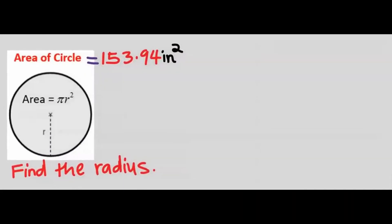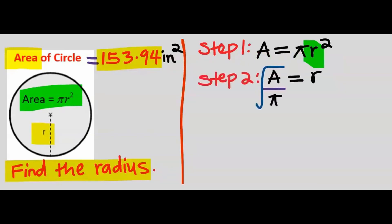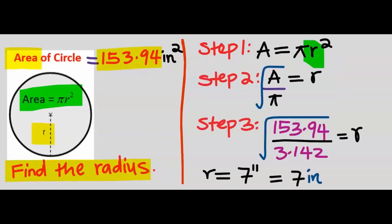Next, the area of a circle is 153.94 inches squared — find the radius of this circle. The first step is to write out the area formula. The next step is to make r the subject, then substitute. The radius is 7 inches.